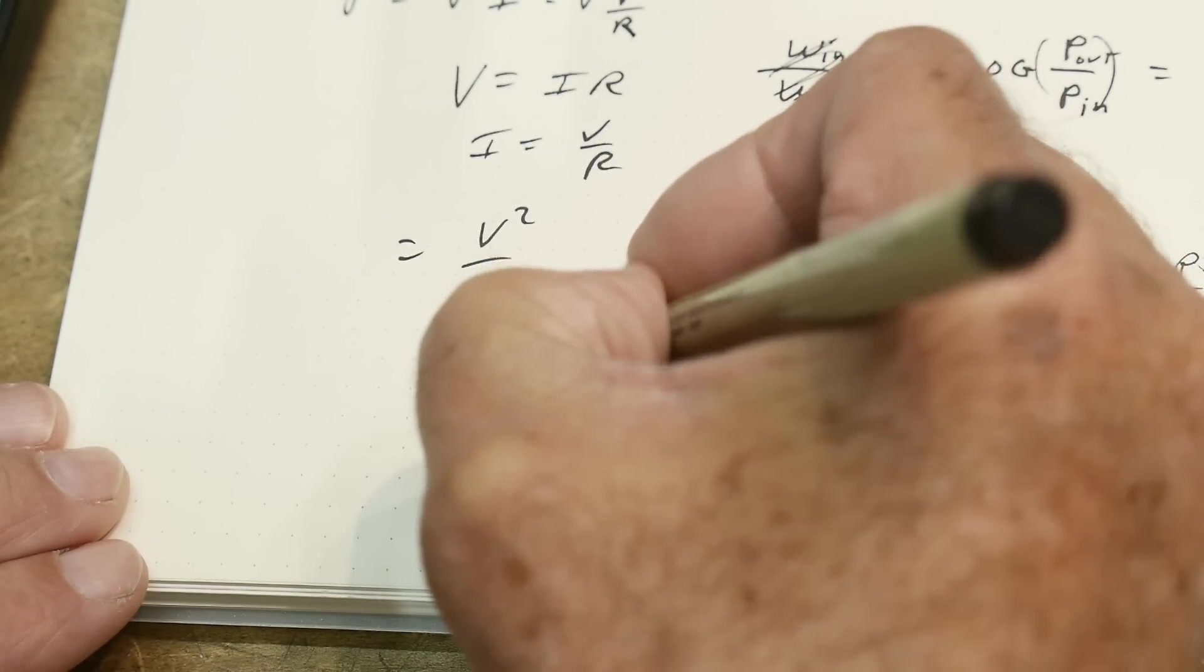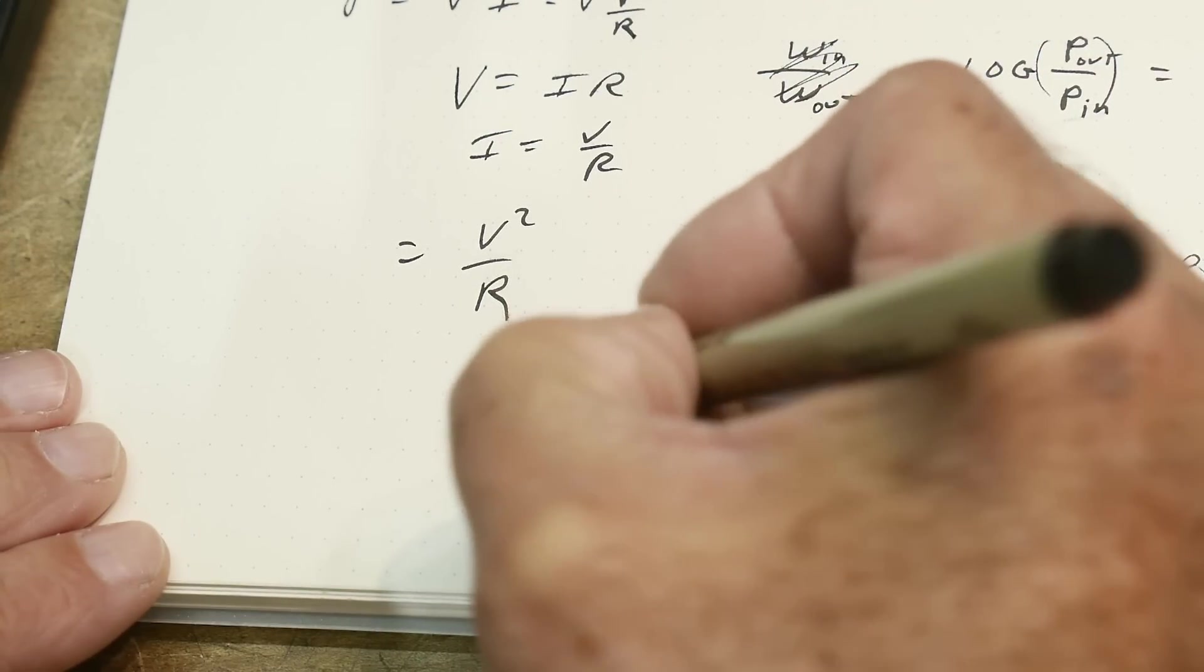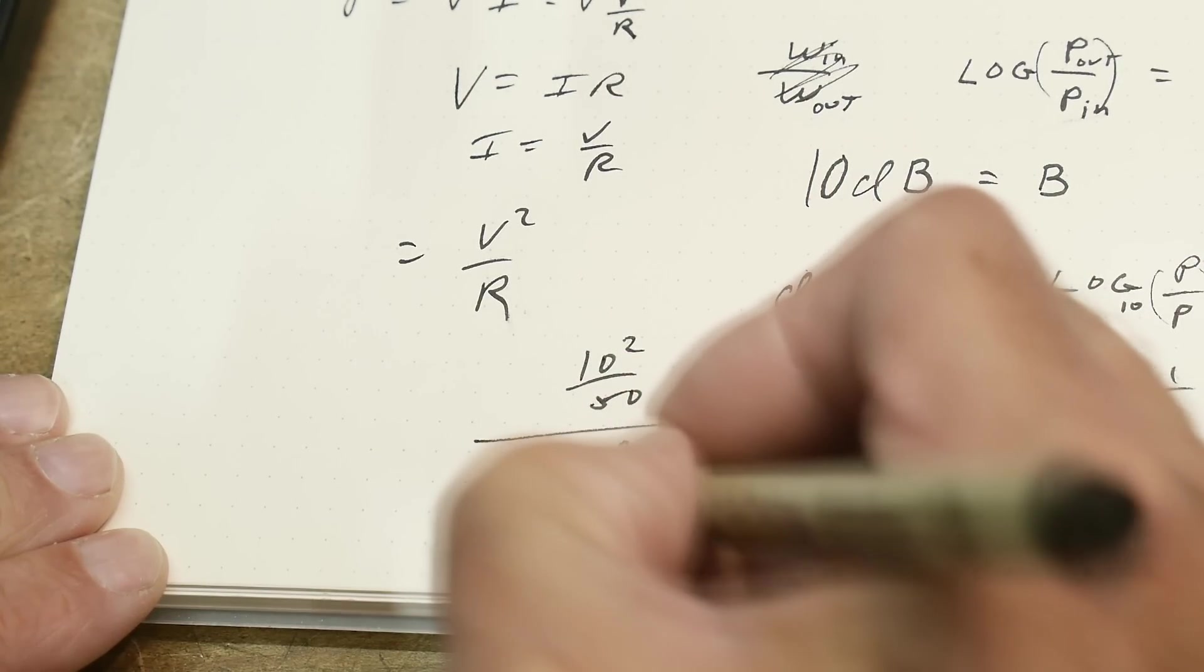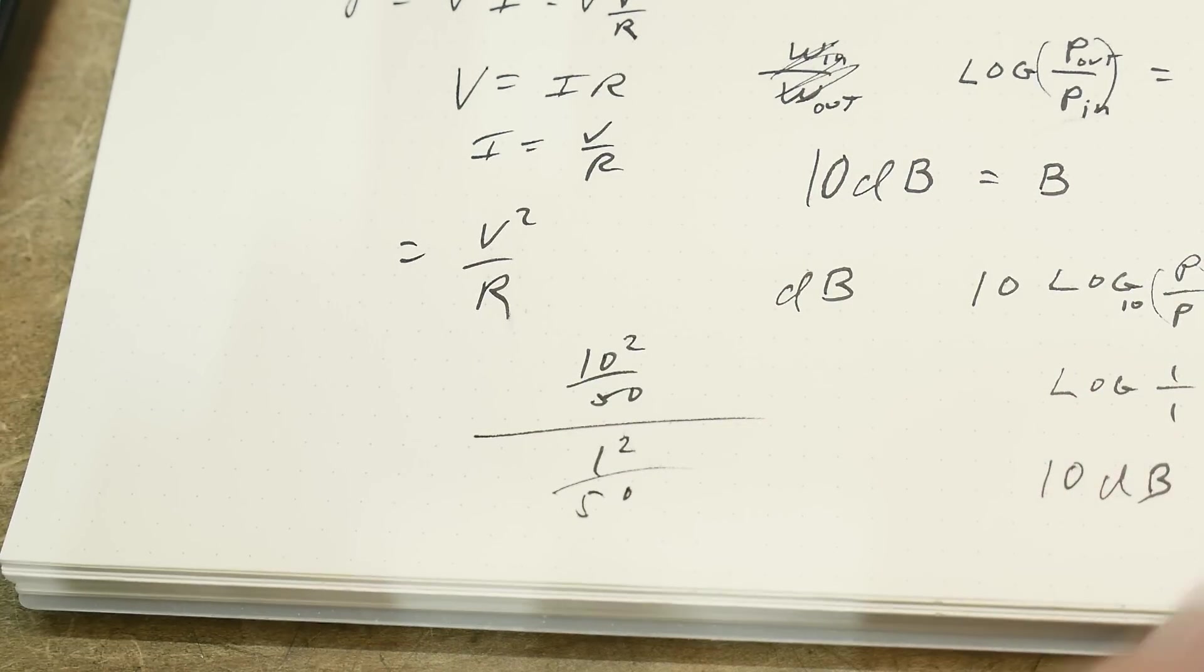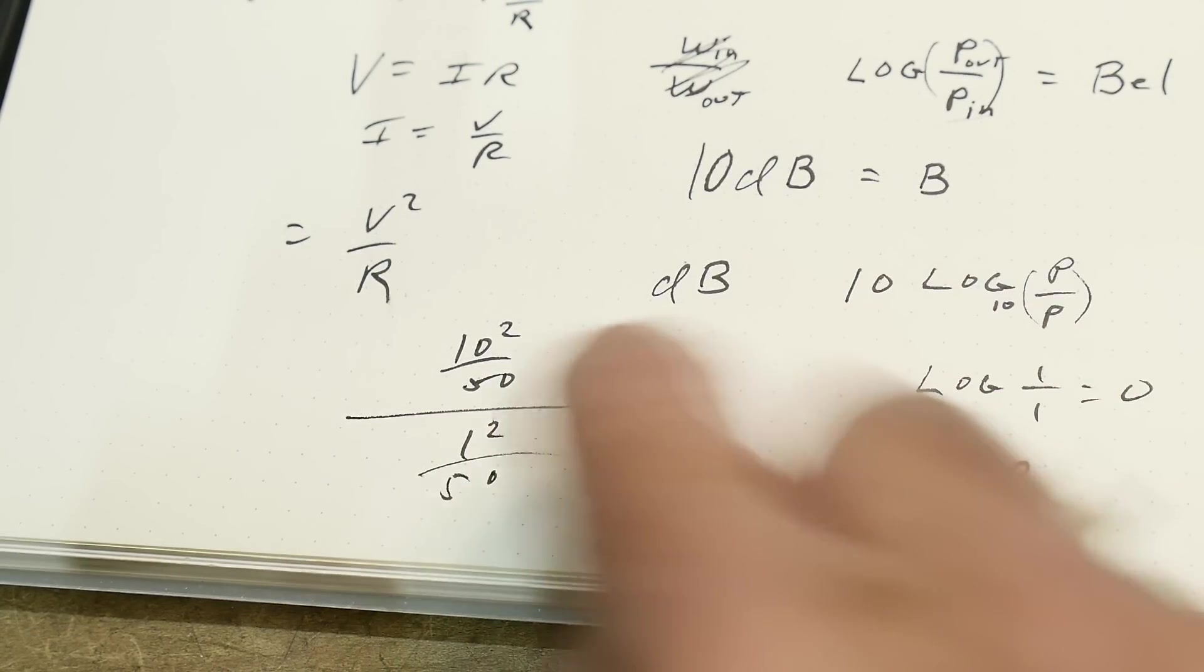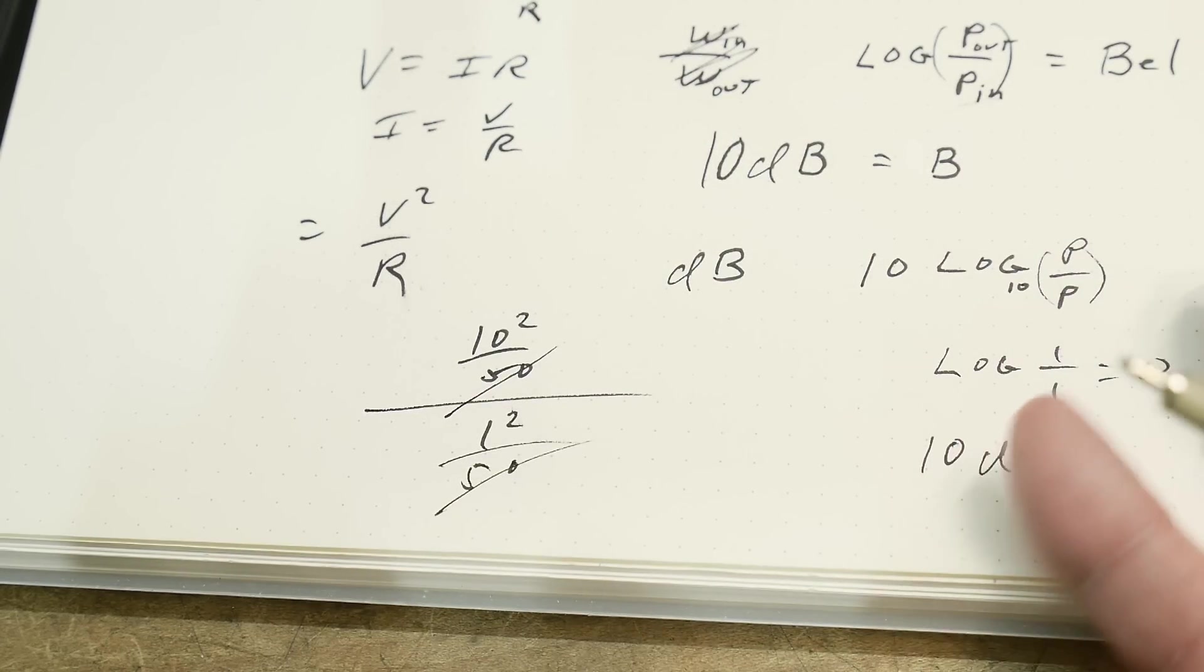Let's give our example. We have 10 volts in and we have a 50 ohm system, we're going to divide that by 1 volt at 50 ohms. This is the same thing, the 50s are going to cancel out because they're the same on the top and the bottom.